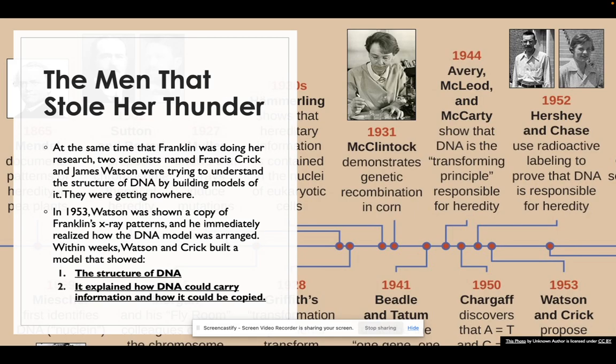At the same time that Rosalind Franklin was doing her work, we had Crick and Watson trying to understand the structure by building different models. Unfortunately those models were getting absolutely nowhere. But in 1953, Watson was shown a photo of Franklin's x-ray patterns and he immediately recognized how the DNA model was arranged. Within weeks, Watson and Crick built an accurate model that showed the structure of DNA and explained how DNA could carry information and how that information could be copied.